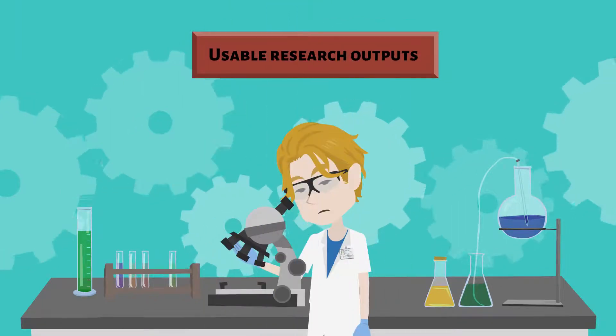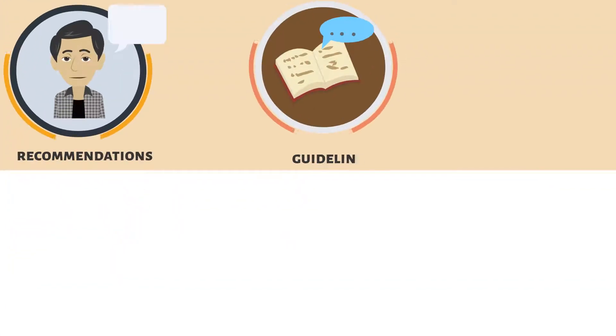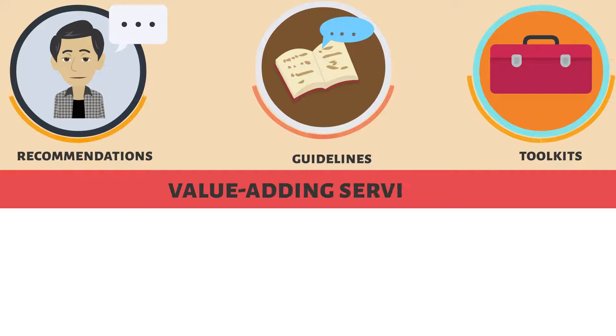Usable research outputs are those that are ready for practical application. To make research usable, ask yourself how to embody research findings into solutions. Common usable outputs include recommendations, guidelines, toolkits, or value-adding services.